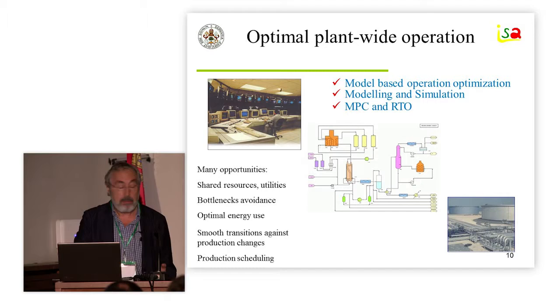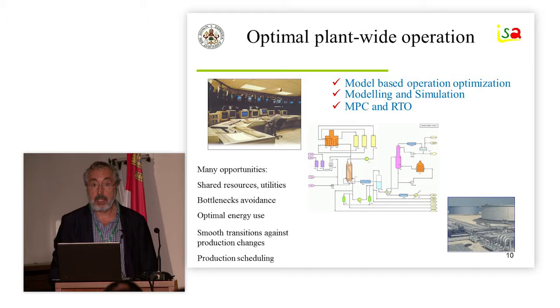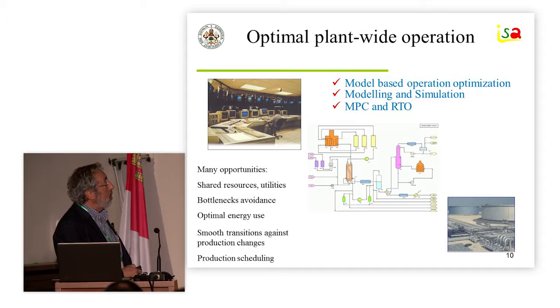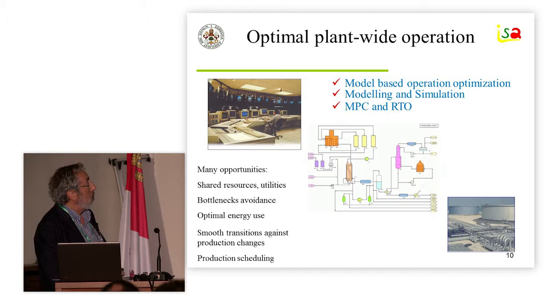There are also problems of integration with production scheduling. In all these cases, what you need is a good model in order to make decisions, because there are a lot of interrelations. Modeling and simulation are key topics. Then, of course, you have to link the operation in the control room — which is mainly MPC, control structures, and DCS — with the decisions you take at the level of the plant, which are linked to RTO.